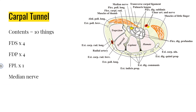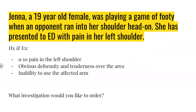Now we've got some clinical scenarios. Here's the first one: Jenna, a 19-year-old female, was playing a game of footy when an opponent ran into her shoulder head on. She presented to ED with pain in her left shoulder, 9 out of 10 pain, obvious deformity and tenderness over the area, and an inability to use the affected arm. Given the history — trauma, obvious deformity, pain and tenderness, and inability to use the affected arm — we should be thinking along the lines of a fracture or dislocation.